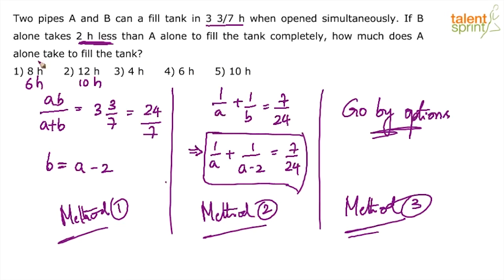And now that you know both the values—time taken by A alone and B alone—can you not substitute in the formula AB by A plus B and verify which one gives you 24 by 7? Yes, you are done.